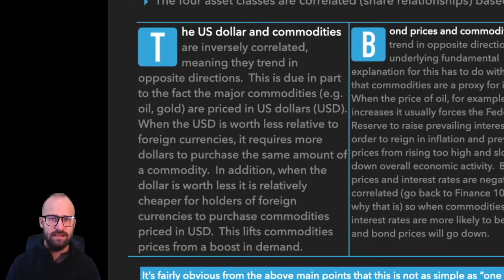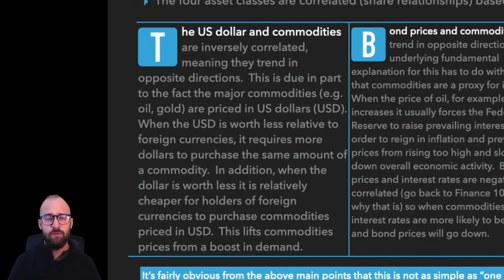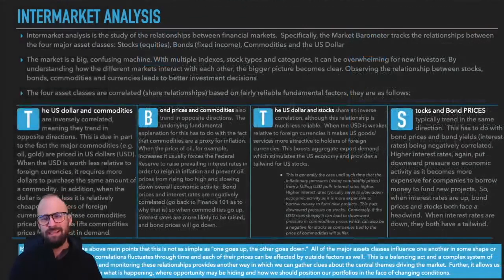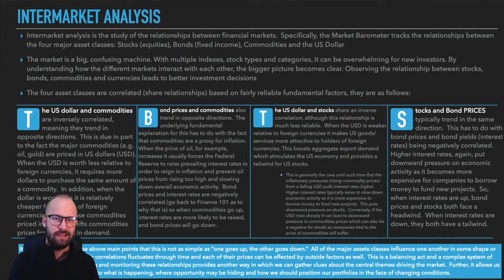Conversely, when the U.S. dollar declines, it makes it cheaper for holders of foreign currencies to purchase those same commodities. This boosts demand for commodities from holders of foreign currencies, which is the majority of the world, and once again provides another tailwind for commodities prices. Commodities like oil, steel, aluminum, copper, and so forth all stand to benefit from a declining U.S. dollar. Now that we have a better idea about the mechanisms by which the U.S. dollar and commodities are correlated, let's hop into the market barometer and measure that historical correlation.